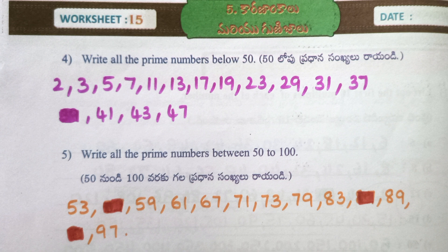Write all the prime numbers below 50: 2, 3, 5, 7, 11, 13, 17, 19, 23, 29, 31, 37, 41, 43, 47.